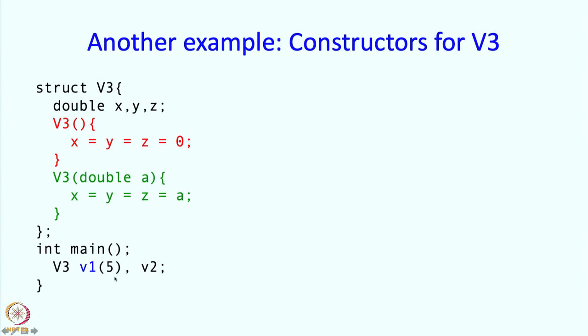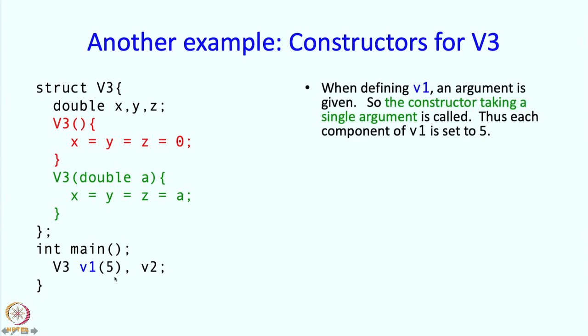How does the main program work? When defining V1 here, an argument has been given. Since a single argument is given, the constructor taking the single argument is called. This is the constructor which takes a single argument. Thus it means that V1.x, V1.y, V1.z are set to the value 5, set to value a which in this case is 5.